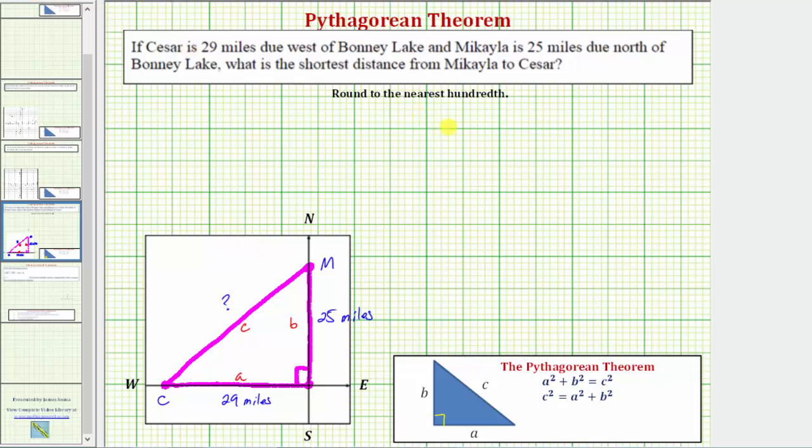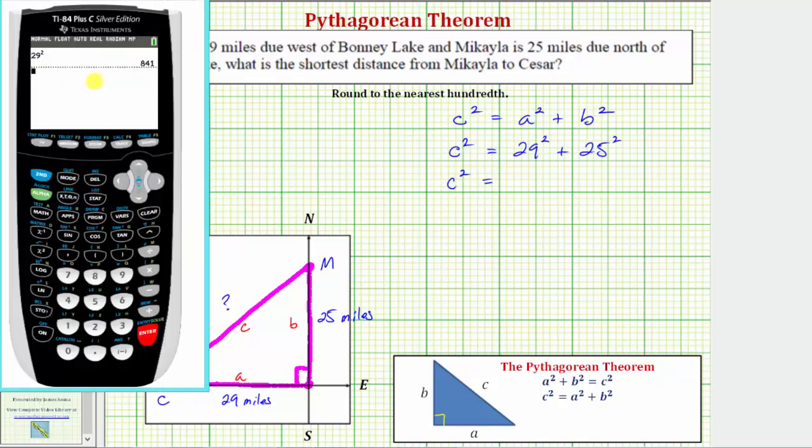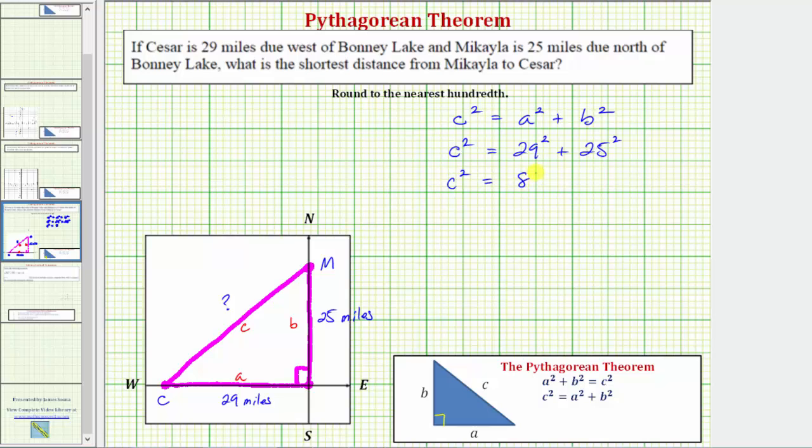So using the Pythagorean Theorem, in the form of c squared equals a squared plus b squared, we would have c squared equals a squared would be 29 squared, plus b squared would be 25 squared. So we have c squared equals 29 squared is 841, and 25 squared is 625.